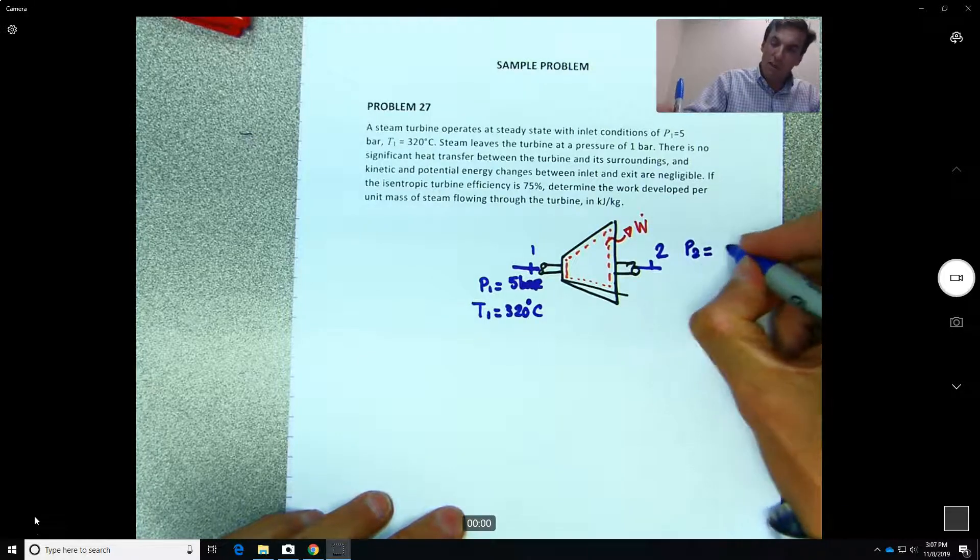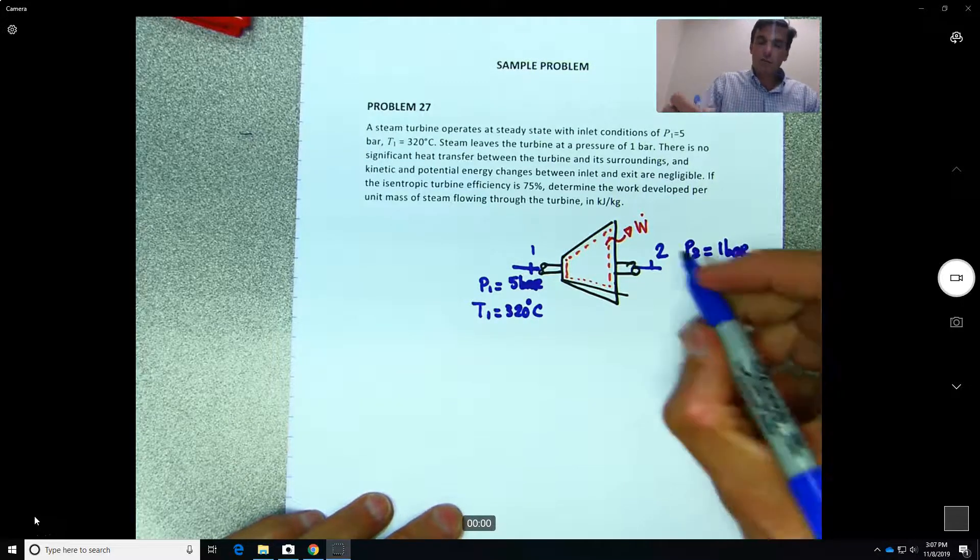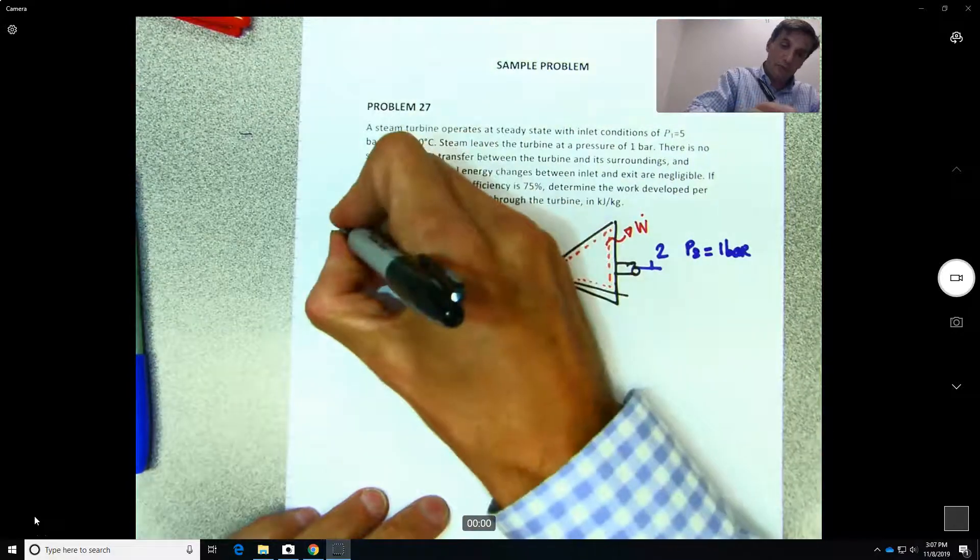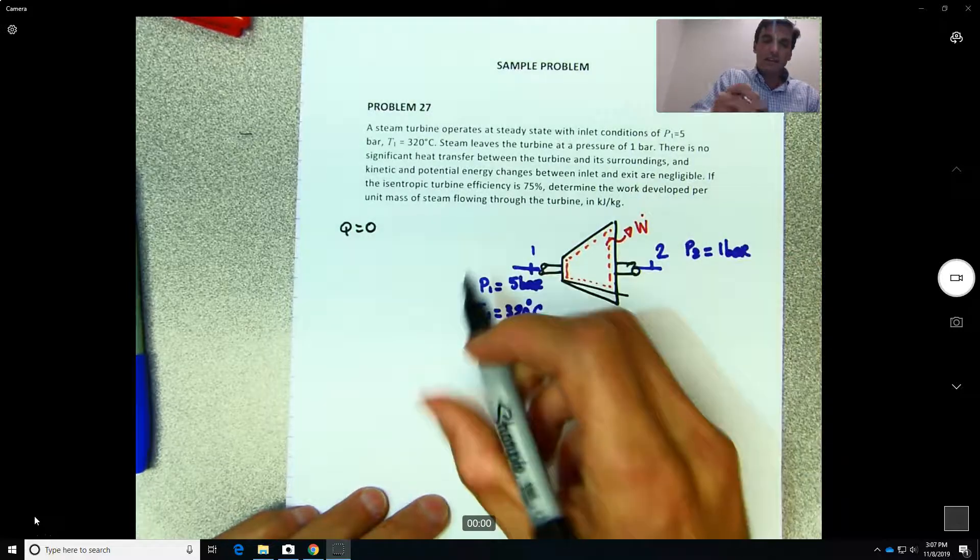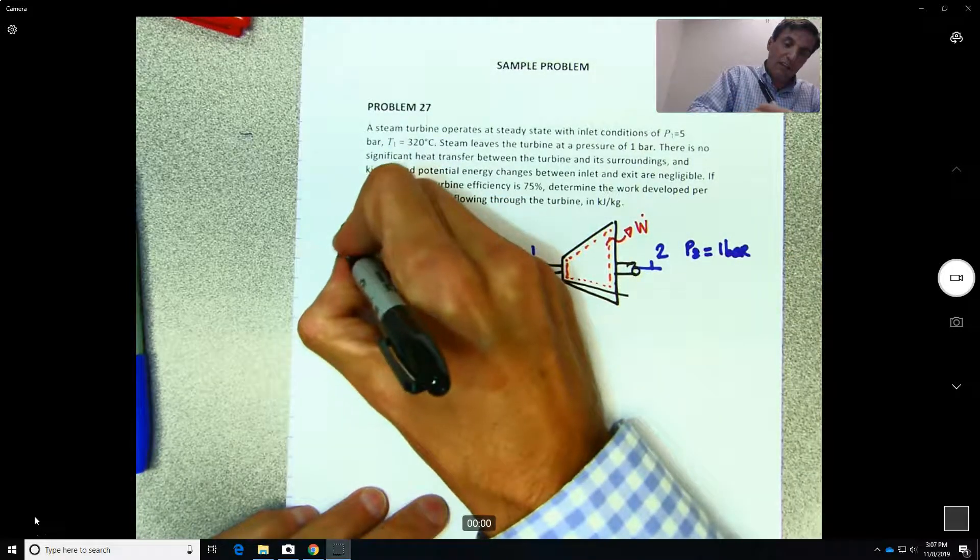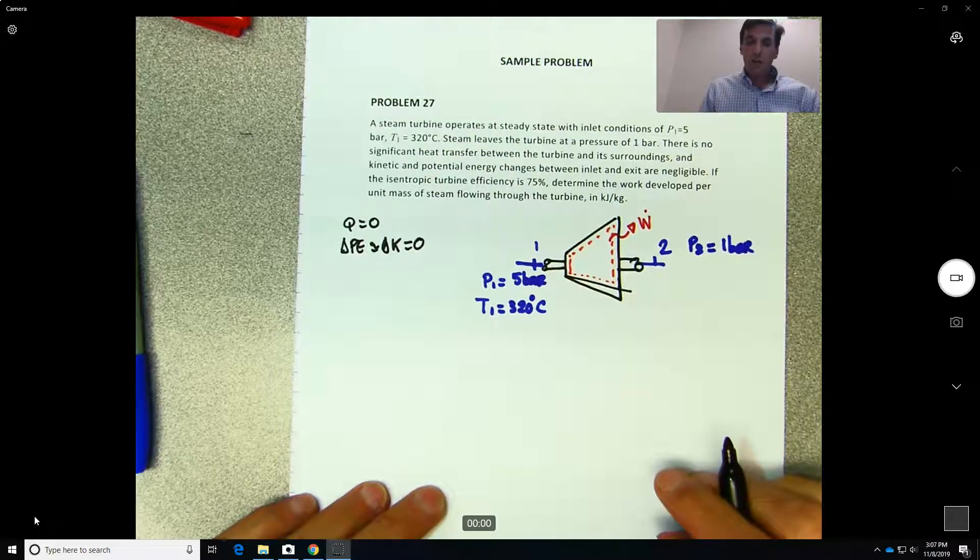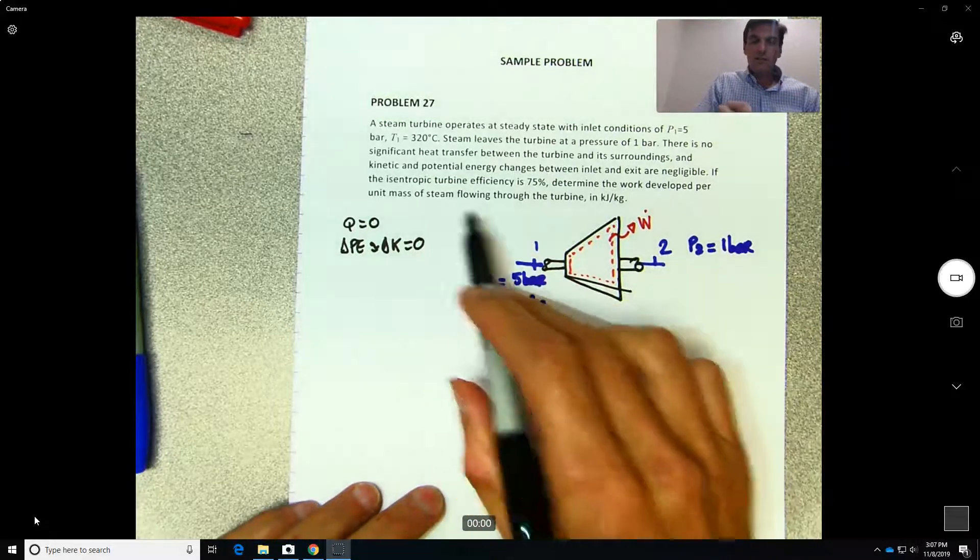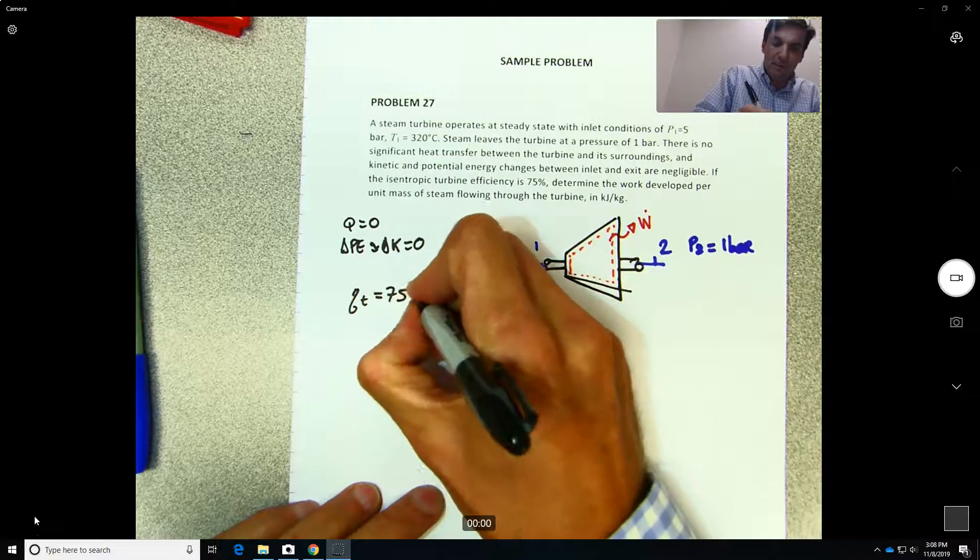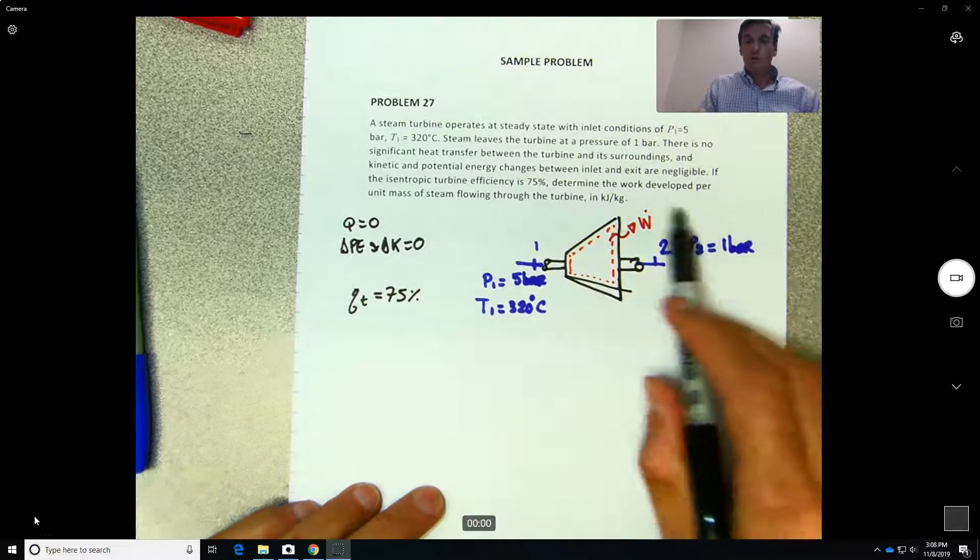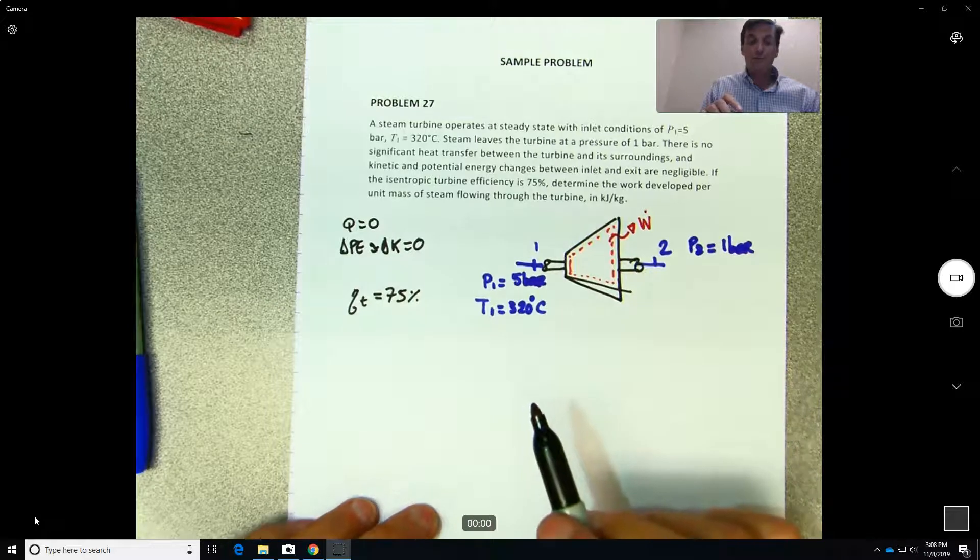What do we know at 1? P1 equals 5 bars and T1 equals 320 degrees Celsius. We know that P2 is equal to 1 bar. There is no significant heat transfer so Q is zero. Kinetic and potential energy is basically zero as well. And we know if the isentropic turbine efficiency is 75%, we need to determine the work developed per unit mass of steam flowing through the turbine in kilojoules per kilogram.